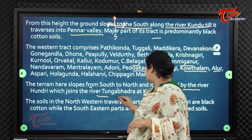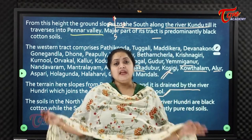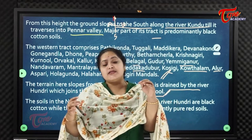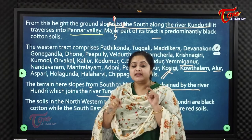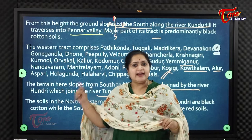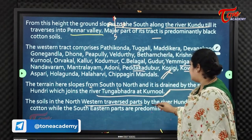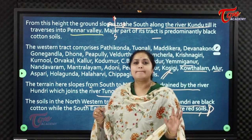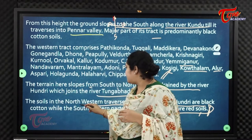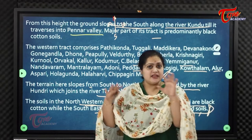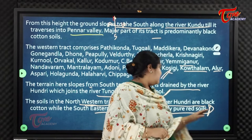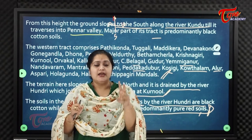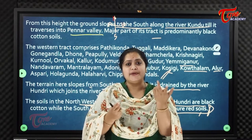The western half is drained by the river Hundri, which joins the Tungabhadra at Karnool. The terrain in the western half slopes towards the north, drained by the river Hundri. The soils in the northwestern paths traversed by Hundri are black cotton soil, while the southeastern paths are predominantly pure red soils. Thus Karnool district has two kinds of soils — black cotton soil and pure red soils.